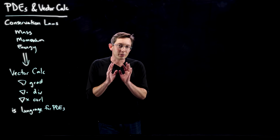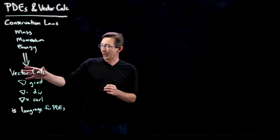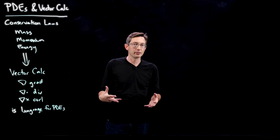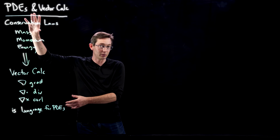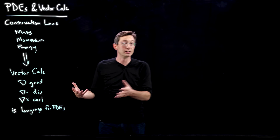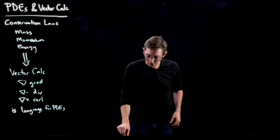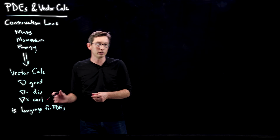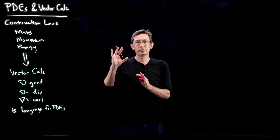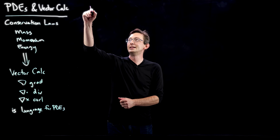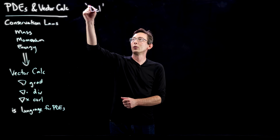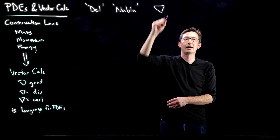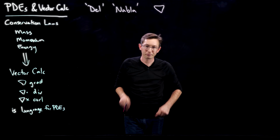Welcome back. We're talking about vector calculus, namely the gradient, divergence, and curl operators, and how we can use those to derive partial differential equations and encapsulate physics into equations. I want to start today by really zooming into these operations of div, grad, and curl. This all starts with the del or nabla operator — it depends on how old-fashioned you want to get — this kind of upside-down delta symbol.